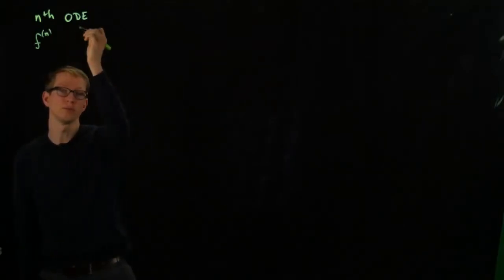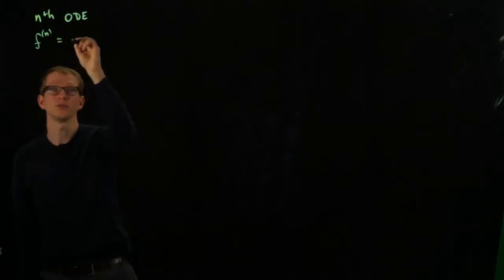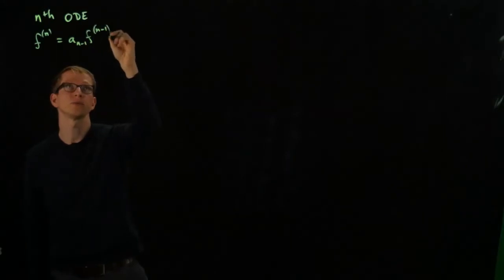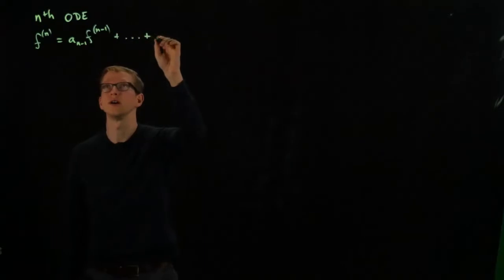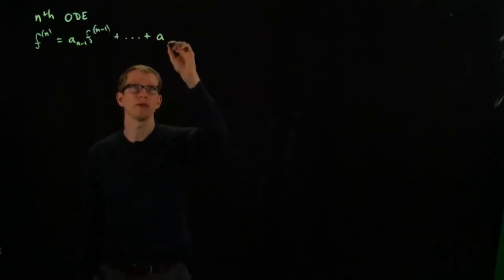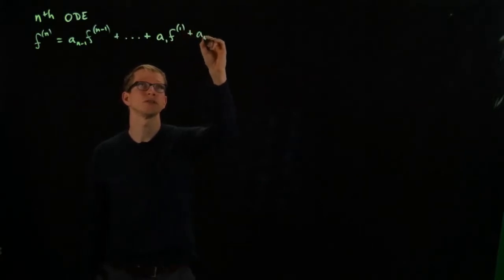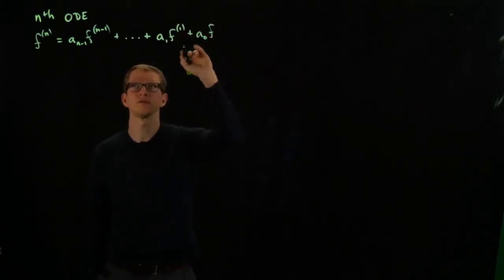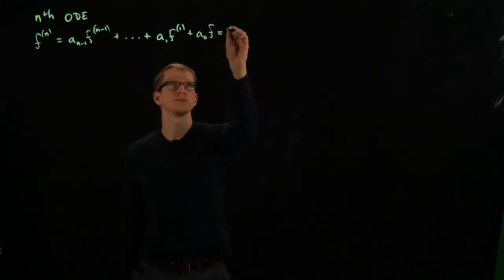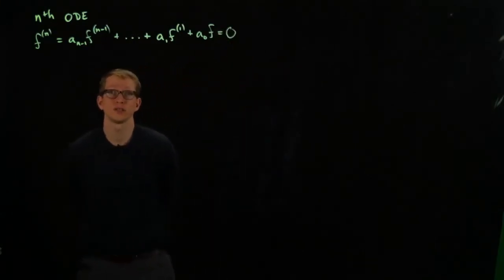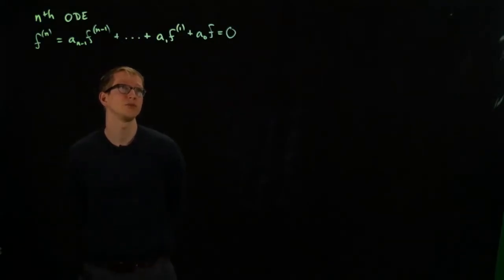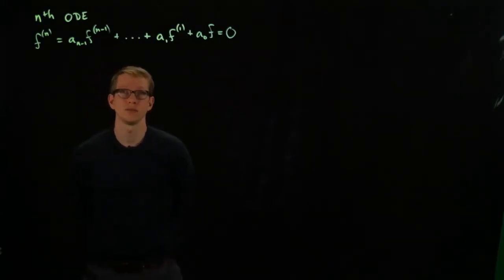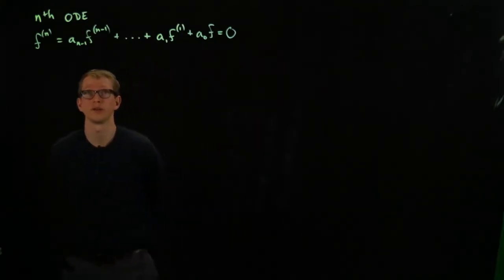In general, you have an equation of the form where the nth derivative equals a_{n-1} f^{(n-1)} plus ... plus a_1 f' plus a_0 f, all equal to zero. These coefficients could be anything — they could even be zero.